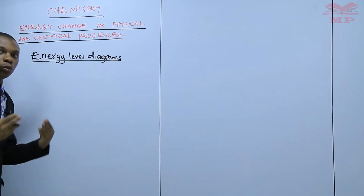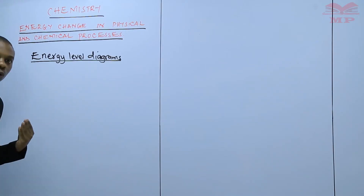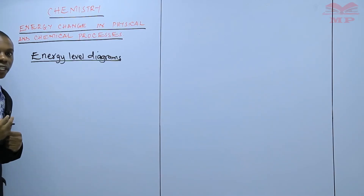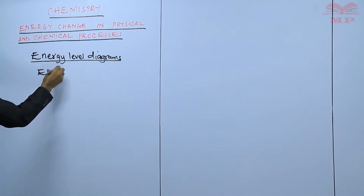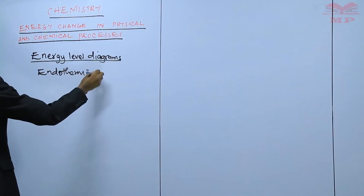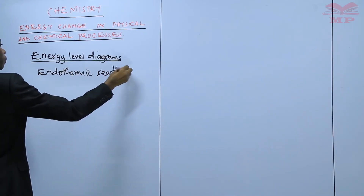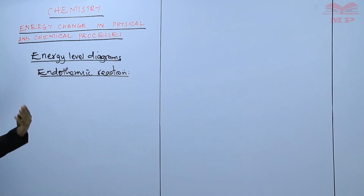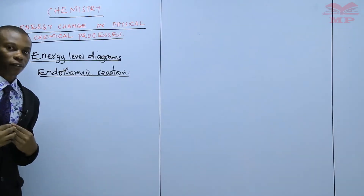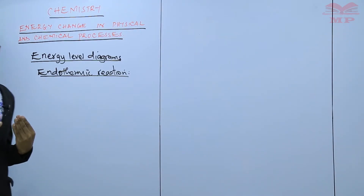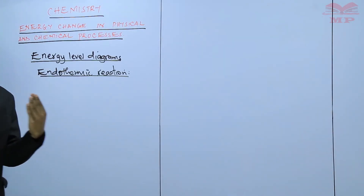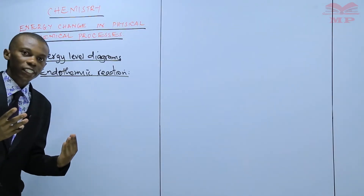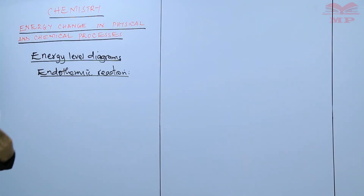By the end of this lesson, you should be able to draw an energy level diagram to illustrate an endothermic reaction. An endothermic reaction is a reaction which involves gain of heat from the surrounding. We are going to draw an energy level diagram to show the relationship between the relative energies of the reactants and the products against the reaction.